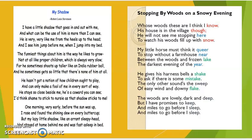Now let's look at the two poems we'll be dealing with today. The first one is 'My Shadow' by Robert Louis Stevenson, and the second is 'Stopping by Woods on a Snowy Evening' by Robert Frost. We have already done Robert Frost's poem, so you should be able to tell me the tone. But first, let's read 'My Shadow' — it's a beautiful poem. 'I have a little shadow that goes in and out with me, and what can be the use of him is more than I can see.'